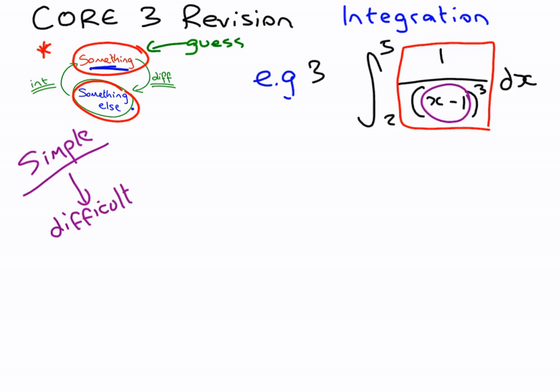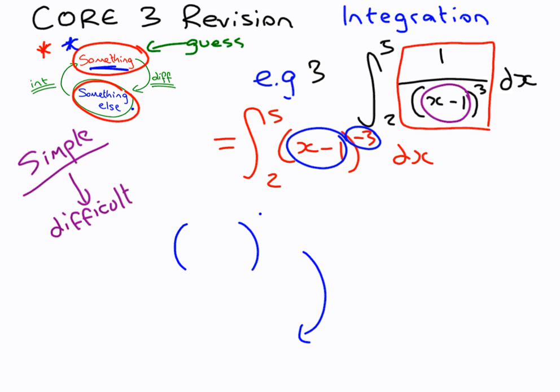So first of all, let's write that how we like to see it, how we like to see it in core 2 as well. x minus 1 to the negative 3. Now it's something to the power of minus 3. So our guess is going to be a bit trickier now. Something to what power so that when we differentiate, we're going to get minus 3? Now when we differentiate, we decrease the power. So what we need to start with is actually minus 2 in this case. And what we want in the bracket is x minus 1.